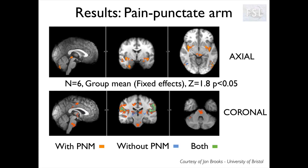Here is an example of the effect of using PNM. These are some preliminary data from a pain study, where the results in blue were obtained without correcting for physiological noise, and the ones in orange were obtained after using PNM. The green areas are those that overlap between the two. As you can see, we can rescue some activation at the base of the brain and in the brainstem when using PNM.